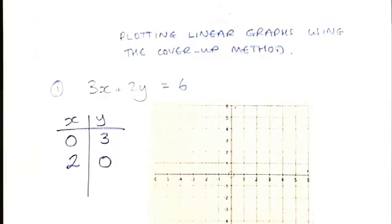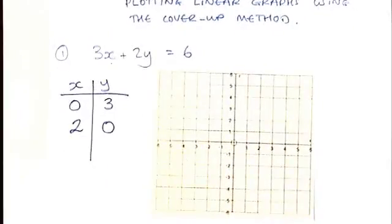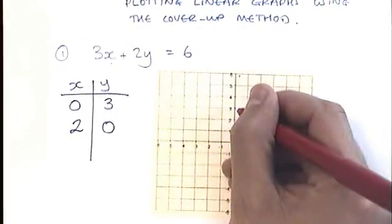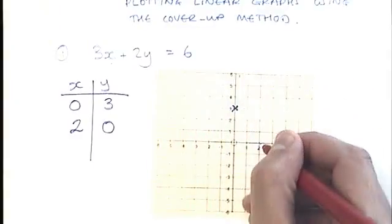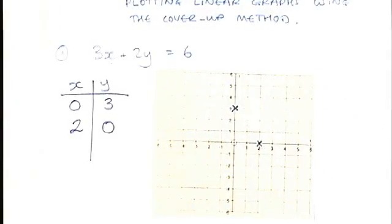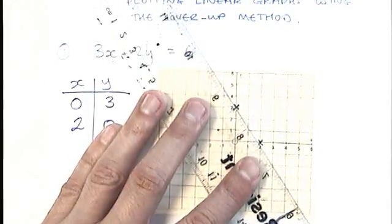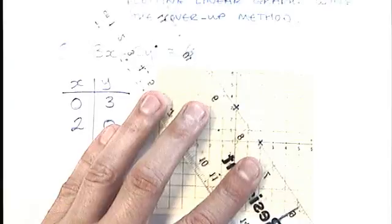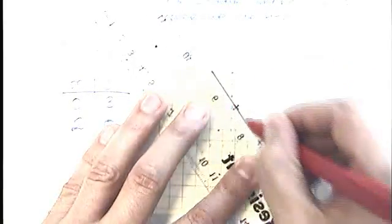So this cover-up method is really relying on the fact that you understand that you can put 0 in the position of the x and 0 in the position of the y. Once you've got those two points, you've got 0, 3, which is here, and 2, 0, which is here, you can then join those two points up with a straight line. And you should get your graph.